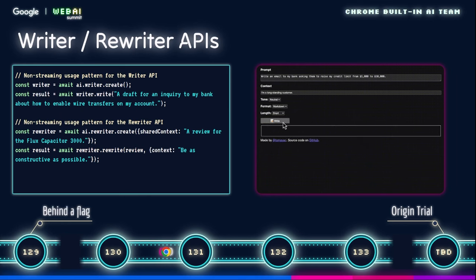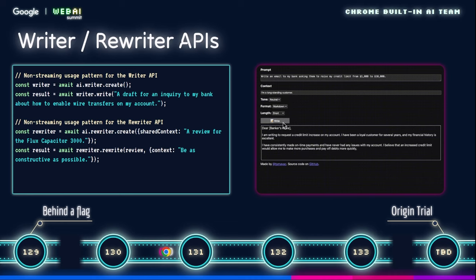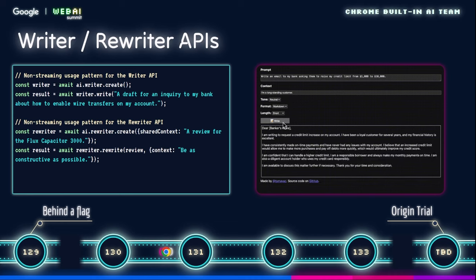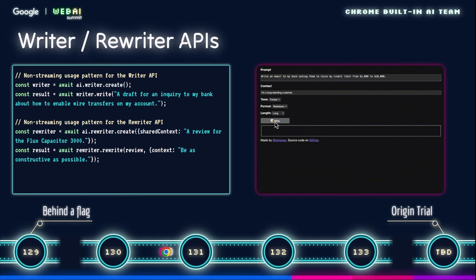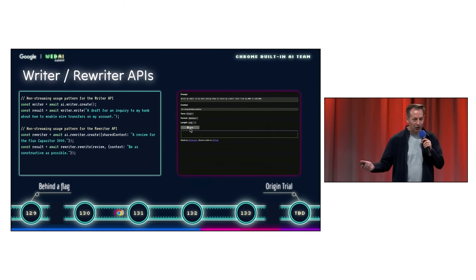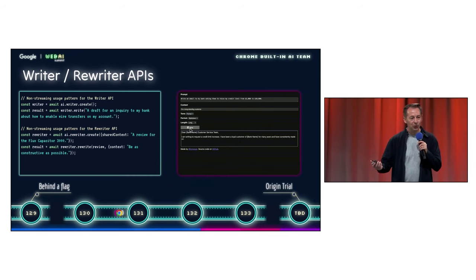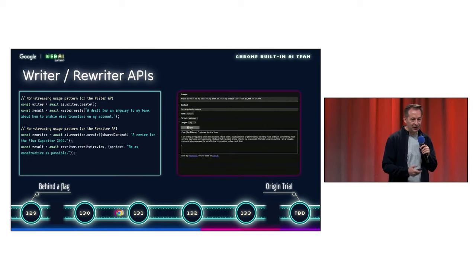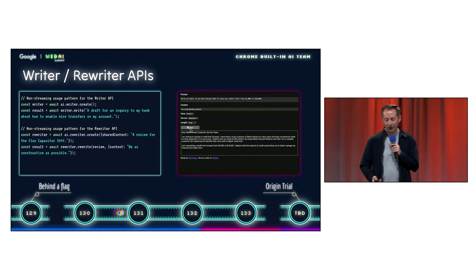Last one: the writer and rewriter API. These are meant to help your users blast through writer's block, improve their writing, rephrase, and all of that. These are in the local prototyping phase and we don't know yet when we're going to do an origin trial. We do want to hear from you whether those APIs are shaped the right way and whether they are useful.